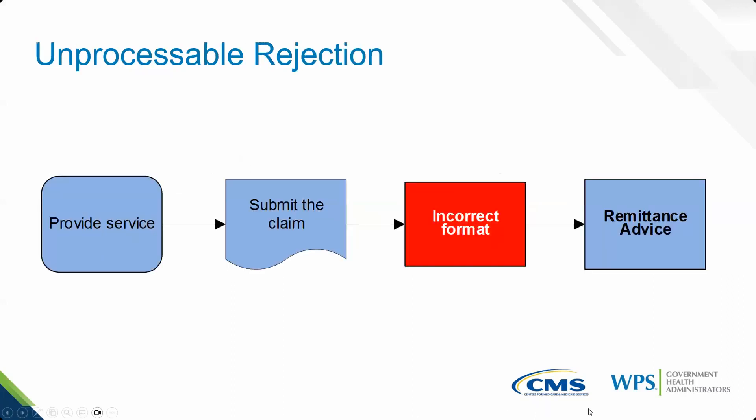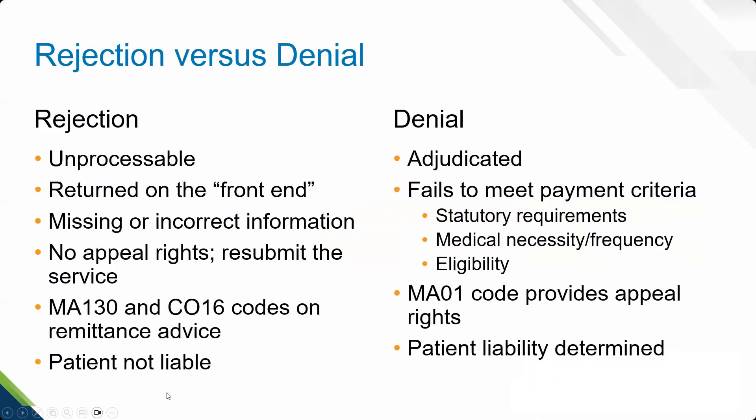Here is a simplified graphic showing what happens to a claim that Medicare deems as unprocessable. The claim has already been accepted into our system; however, something is missing, invalid, or incorrect, which makes it unprocessable. This slide shows a side-by-side comparison of a claim rejection as opposed to a claim denial — they really are two different things. You have different actions to take when there is a rejection versus a denial, so it's really important that you understand the difference.